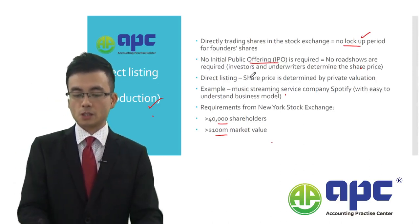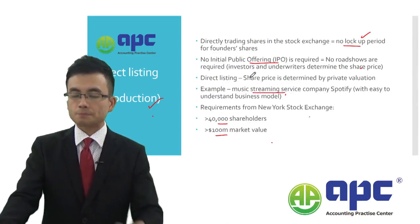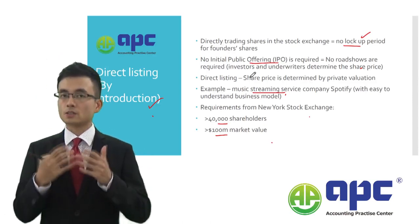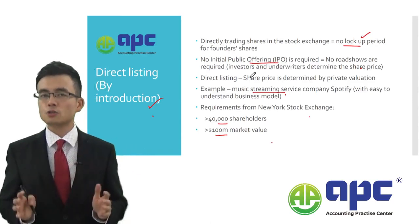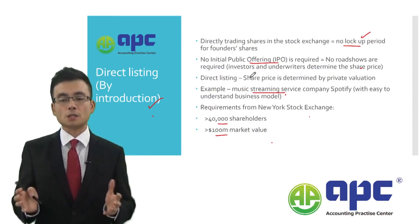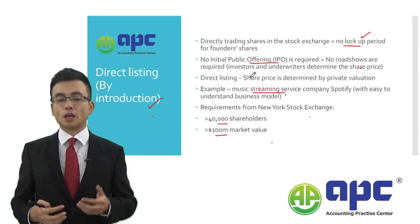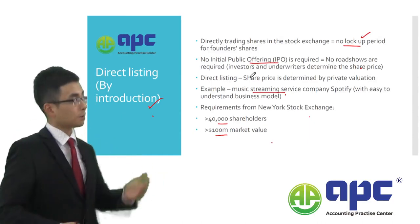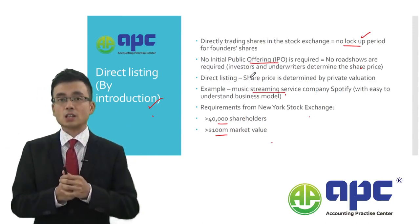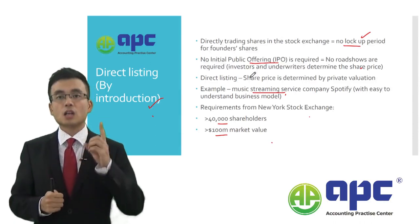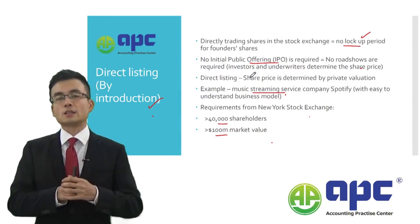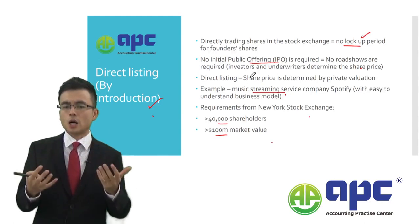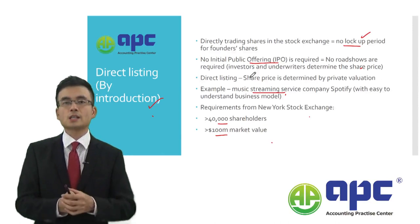A well-known example is Spotify, the famous music streaming company, which used this method to obtain listing status. A common characteristic of such companies is having an easy-to-understand business model, because when customers easily understand your business, they may become shareholders. As long as the number of shareholders reaches more than 40,000 and market capitalization exceeds a hundred million dollars, you can obtain listing status on those stock exchanges. As a caveat, the requirements in different stock exchanges may change from time to time — in my article I provided the requirements taken from the New York Stock Exchange in 2020.